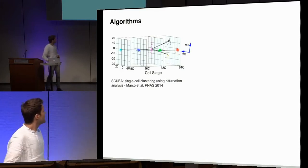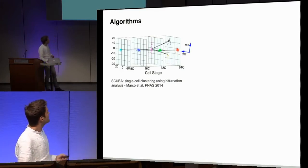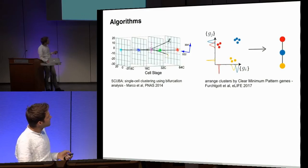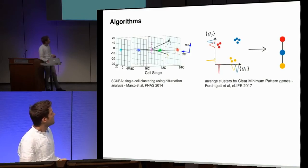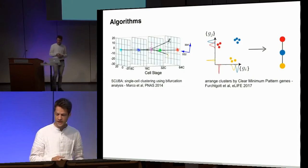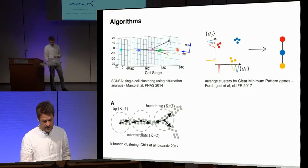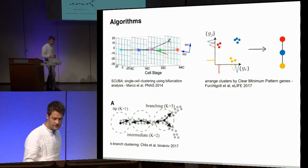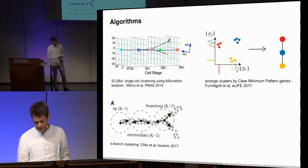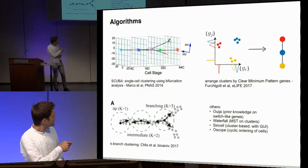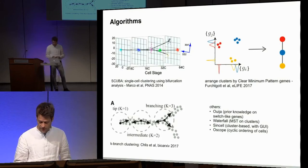Then just a bunch of additional ideas. Scuba was just trying to learn with actual time points some type of bifurcation structure. Similarly, this idea of clear minimum patterns, which I think would be quite nice for also working on image tracing data, where cells were compared by the number of patterns of particular specific phenotypes they were acquiring. And a recent work based on an extension of k-means to projective space to identify branching regions with k-branch clustering, as well as many others, including those where you can put additional prior information in.